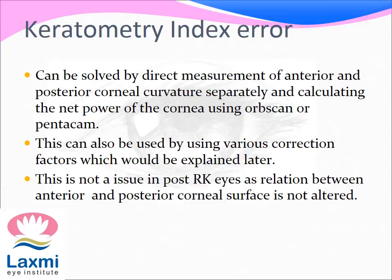Keratometry index errors can be solved by direct measurement of anterior and posterior corneal curvature separately and calculating the net power of the cornea using ORP scan or Pentacam. This can also be addressed using various correction factors, which will be explained later. This is not an issue in post-RK eyes, as the relation between anterior and posterior corneal surfaces is not altered.